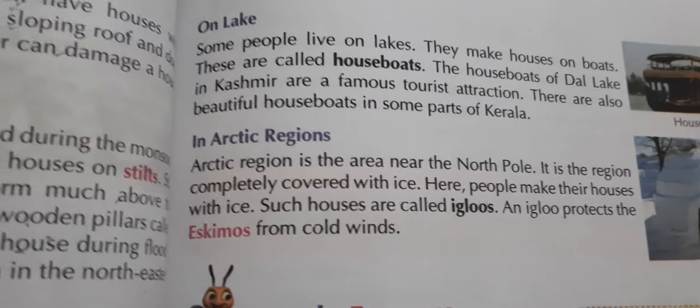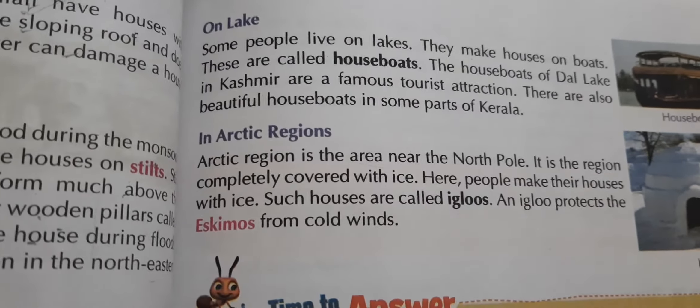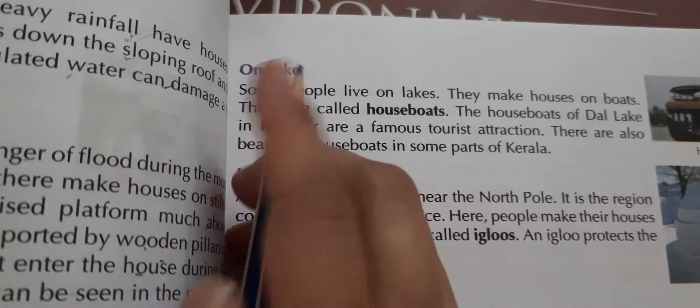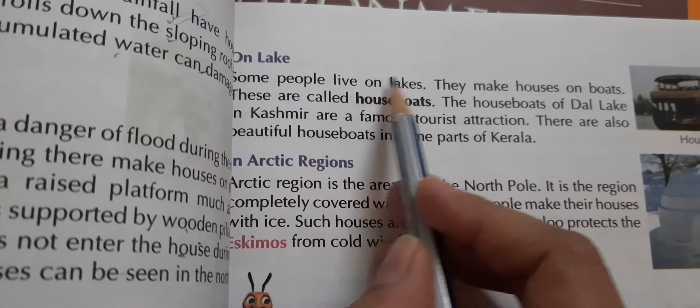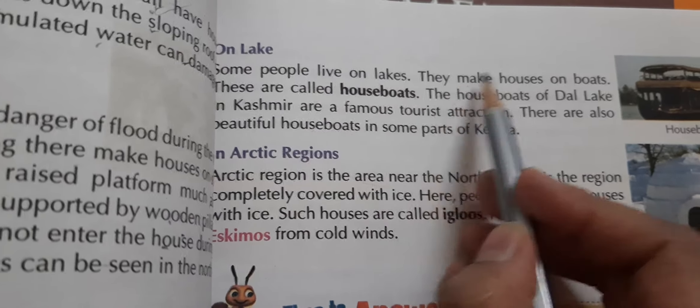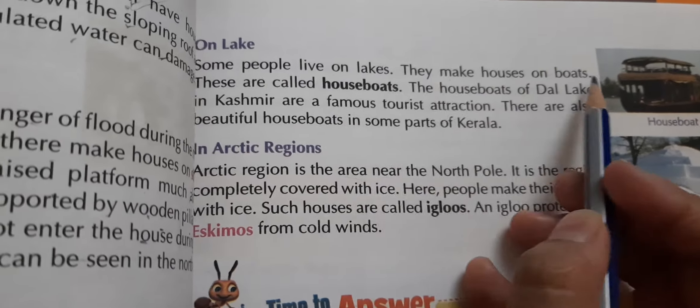Now on page 93, there are two more types of houses. On lakes and in Arctic regions. Some people live on lakes and make houses on boats. These are also beautiful. Such houseboats can be seen in Kerala as well.